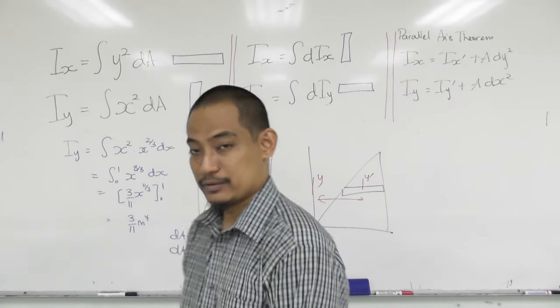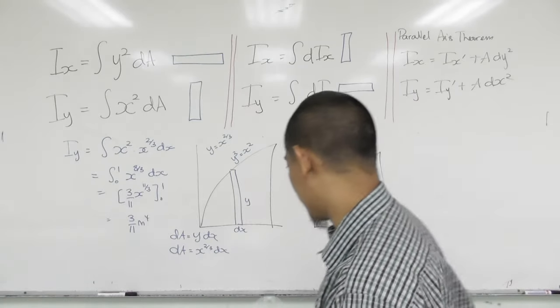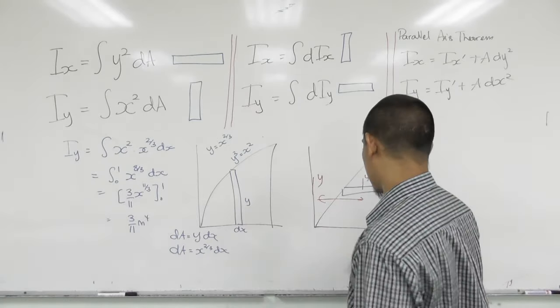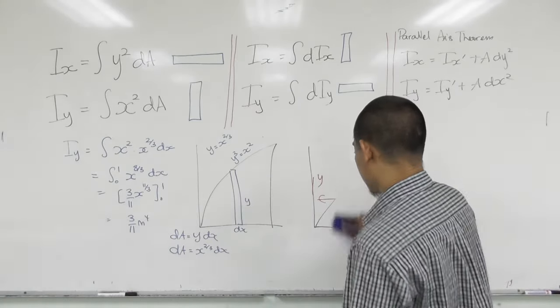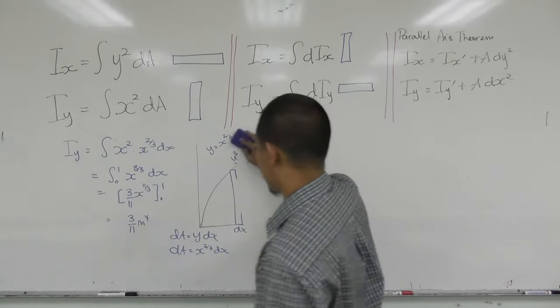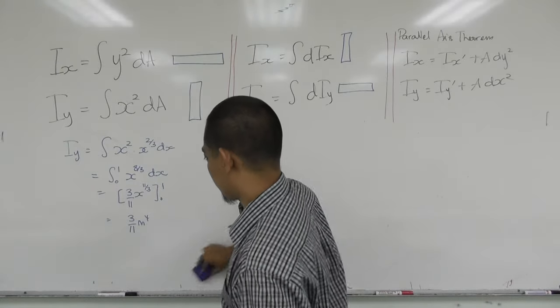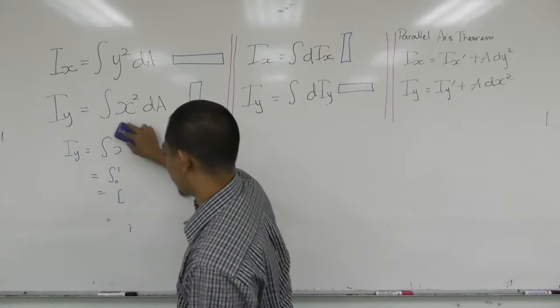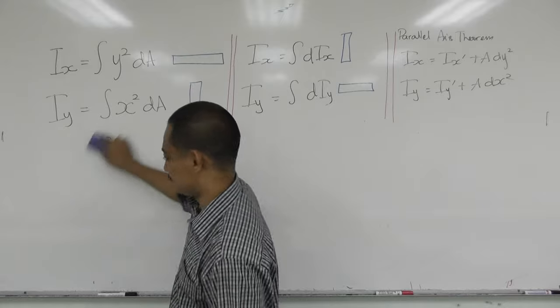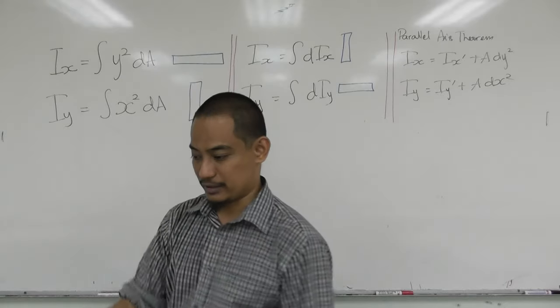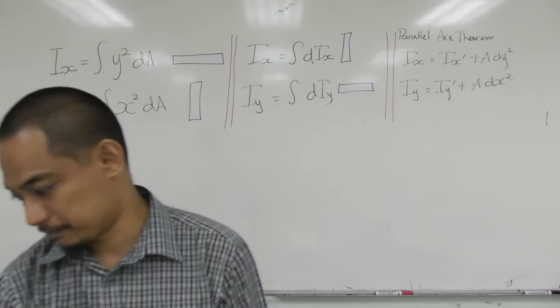So Iy = (1/6)hb³, which matches the expected answer. That's another example completed. For the concept quiz, hopefully based on your understanding you can try those.